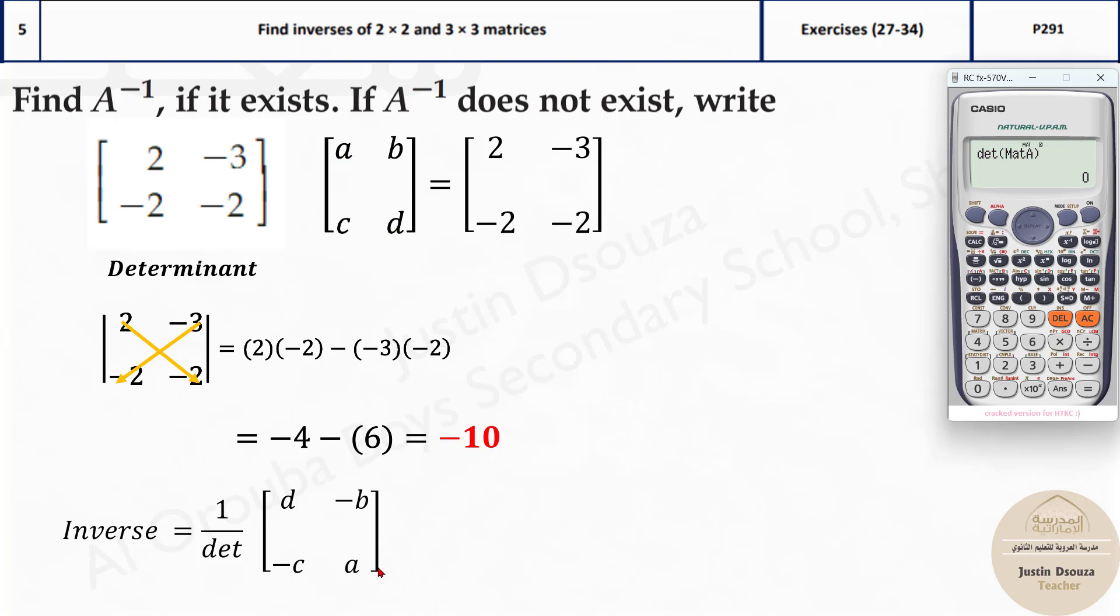Instead of D, it becomes A place and A comes to D's place. Whereas B and C doesn't change, but you have to multiply by a negative sign. So here, this shifts. See what happens?